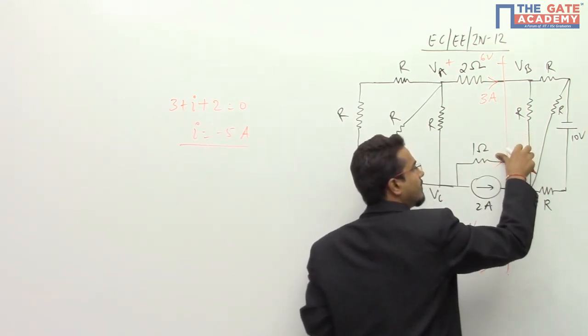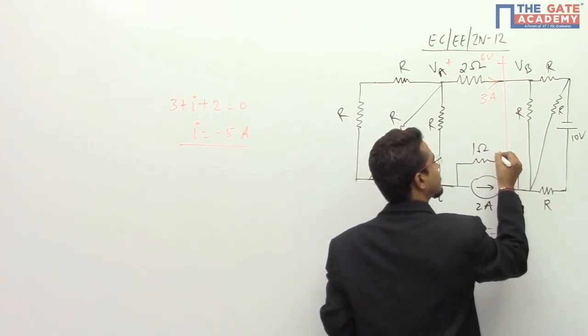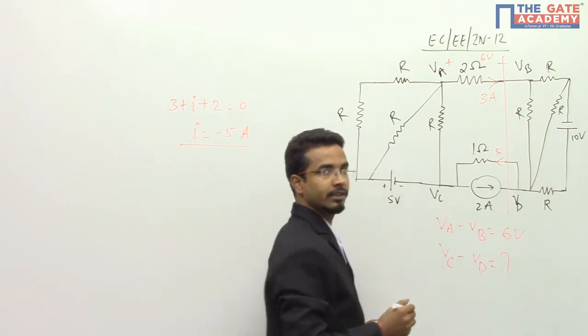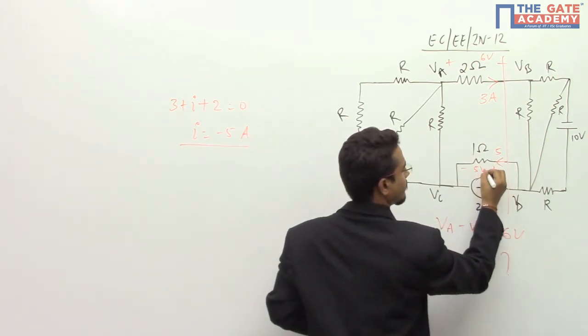So what is the value of the actual current? Actual direction of the current will be in a positive side. So this current is 5 ampere. And 5 into 1, the potential will be 5 volt.